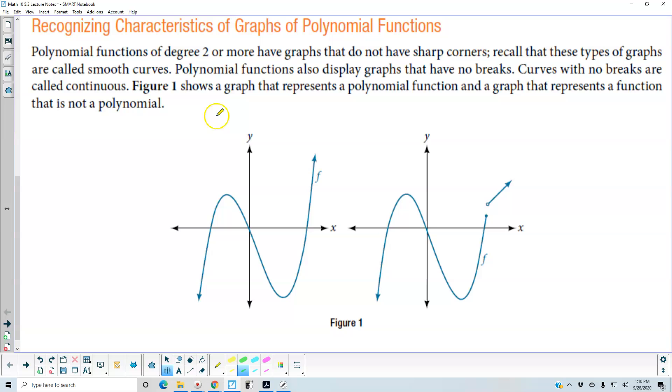Figure 1 shows a graph that represents a polynomial function and a graph that represents a function that is not a polynomial. So if you look at the first one here, if you imagine yourself putting a pencil on this graph, and if you follow the graph and never have to pick up the pencil, then that means that's considered continuous.